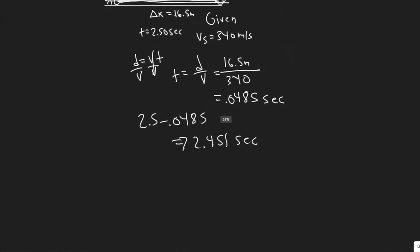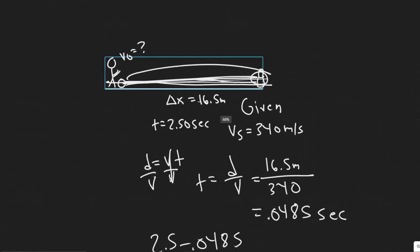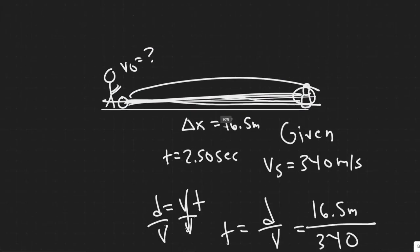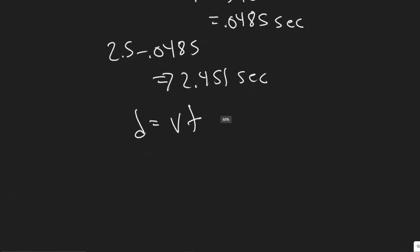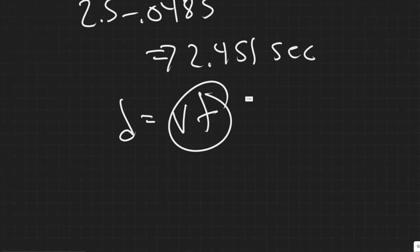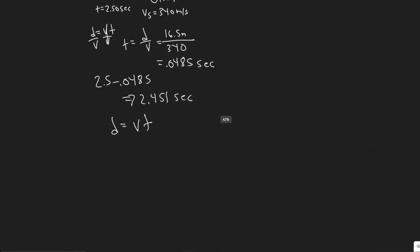And then once again, we're going to use the same formula. So distance equals velocity times time. But in this case, keep in mind the velocity is constant throughout. There's no acceleration on this. We're assuming that at least. So the initial velocity is the same throughout. So that's why we can use this formula. So distance equals velocity times time. We know how long it takes, 2.45 seconds. And we know the distance it's going to travel, right? It's just the length of the lane, 16.5 meters.